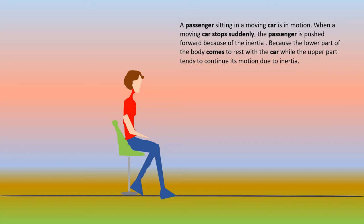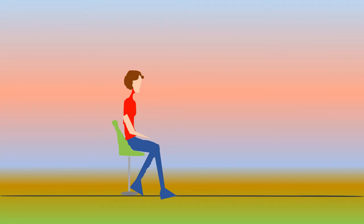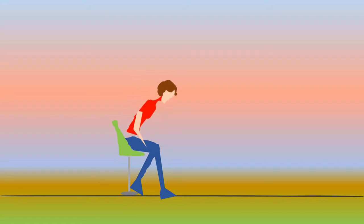The lower part of the body comes to rest with the car while the upper part tends to continue its motion due to inertia. So don't you think, children, seat belts play a very important role while you are driving a car? Always wear seat belts for your safety.